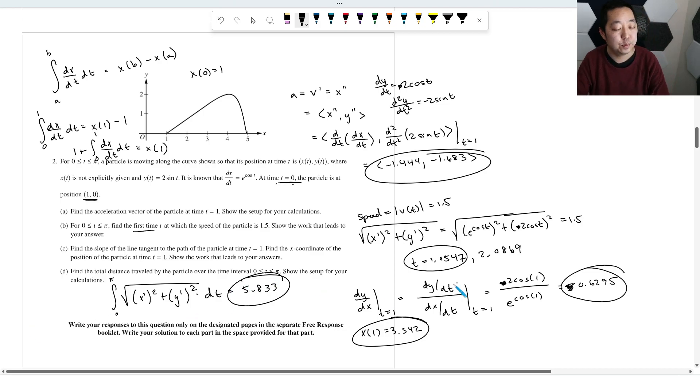I get 5.833, 5.833, 5.833. Okay, cool. That's part D. All right, other than my mess up on the derivative, sine is not negative cosine, I don't know what I was thinking. Everything else I think is correct.